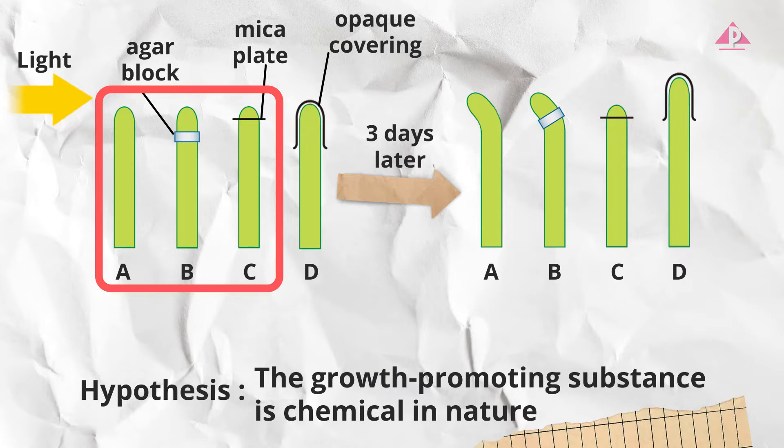Then compare A and B and we know that both A and B grew and bent. Based on these comparisons we can deduce that the growth promoting substance had transmitted from the tip to the lower part in B but not in C.